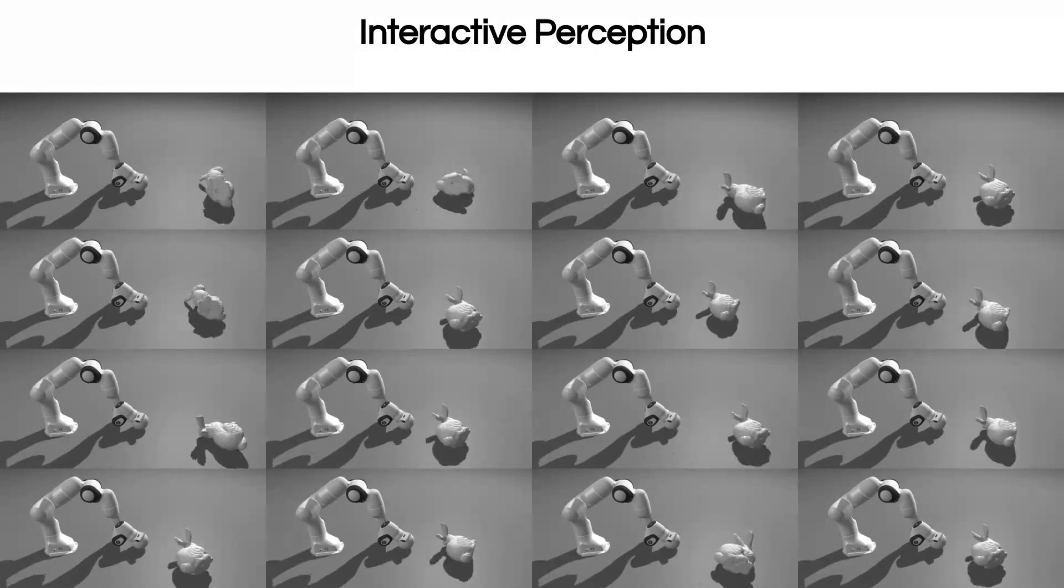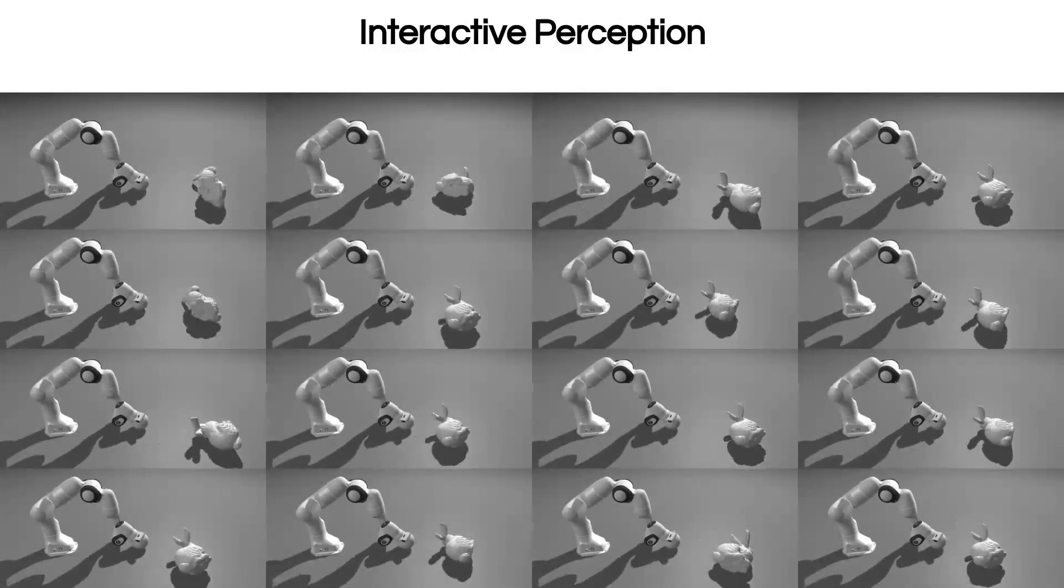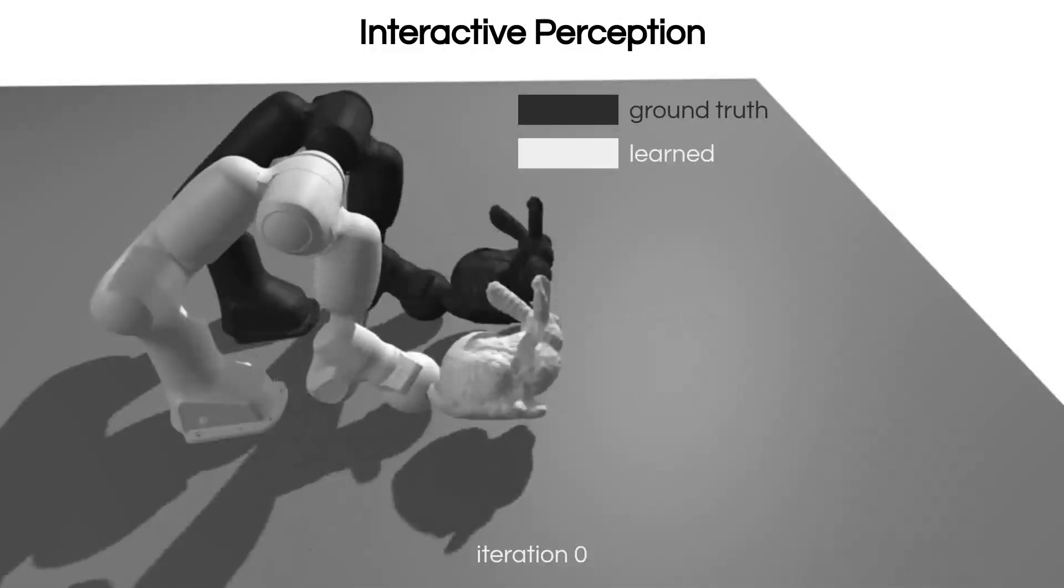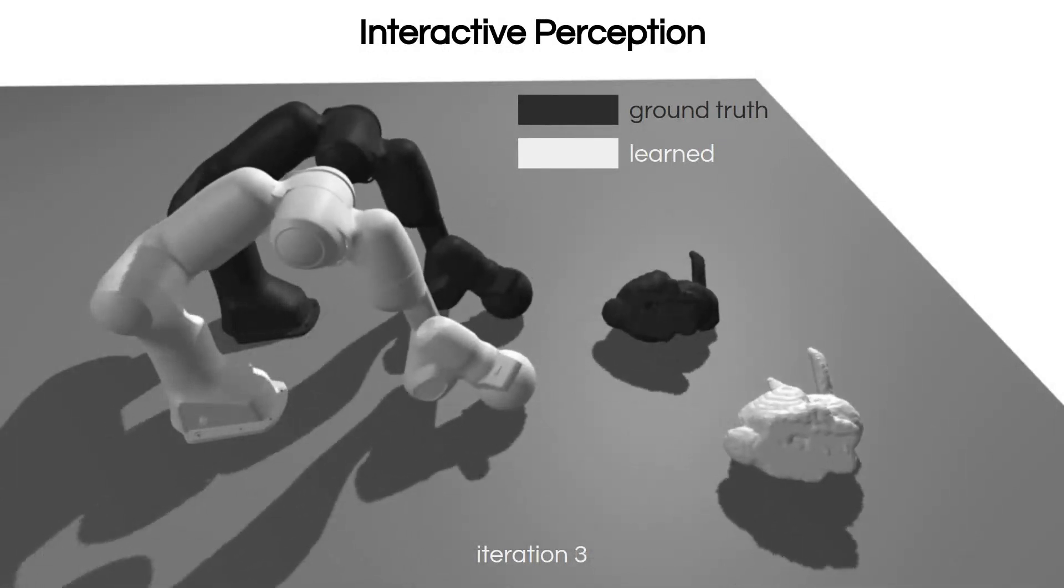Leveraging the differentiability of the simulator, we use gradient-based optimization. At the beginning of the optimization process, the learned model slides too much. However, after a few iterations, the model accuracy improves significantly.